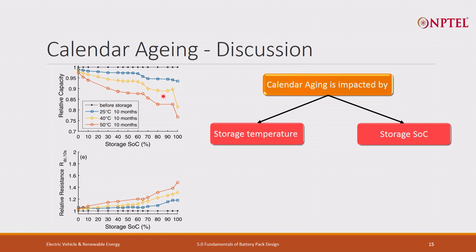This temperature effect mostly comes into picture when the vehicle is parked in direct sunshine — internal vehicle temperature can go very high, which affects your battery packs. Regarding the dependence on storage SOC, consider 25 degrees Celsius: if the cell is kept at 40% SOC for 10 months at 25 degrees Celsius, you will have around 3% degradation. But when the same cell is kept at 100% SOC for 10 months at 25 degrees Celsius, you will have around 6% degradation.